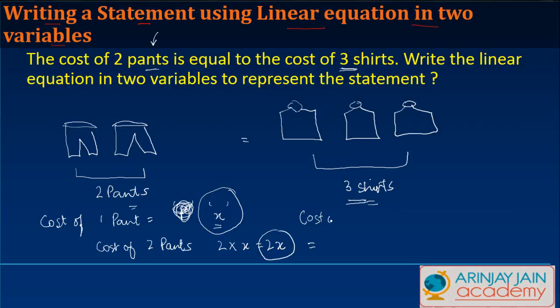Let me call this the cost of one shirt is equal to Y. Then what is the cost of three shirts? The cost of three shirts, like cost of two pants, is equal to three times the cost of one shirt or 3Y. But we are told that the cost of two pants is equal to the cost of three shirts.